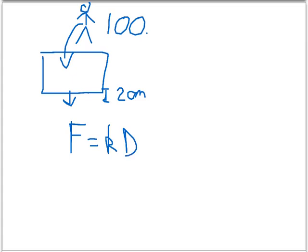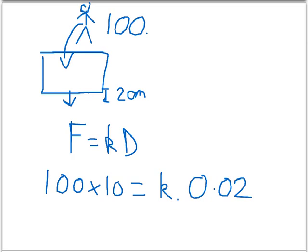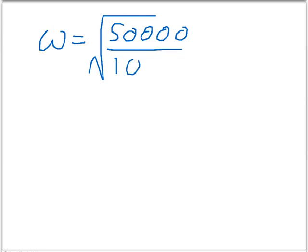The spring is already displaced by the car. This is an extra displacement. The same thing applies to extra displacements as well. So we have a force, which is mg, 100 times 10, equals k times 0.02 meters. So k is around 50,000 newtons per meter. We have k, and we have the mass of the car. So we should be able to work out the oscillation period. Omega equals root k, 50,000 over m, 1,000.